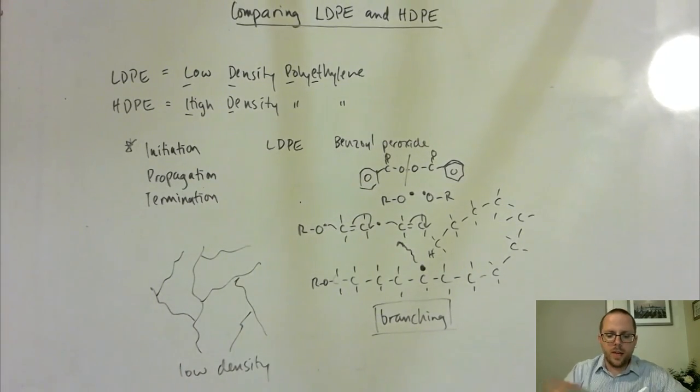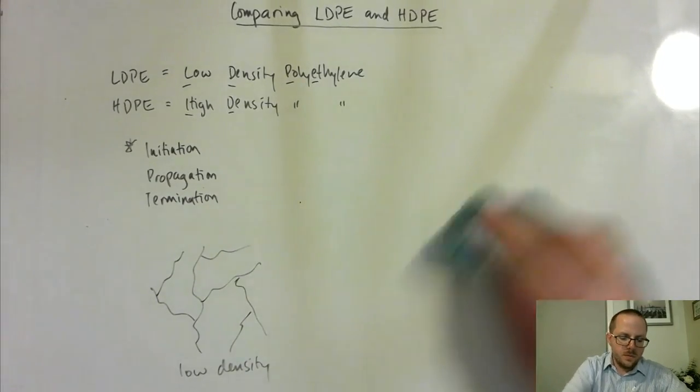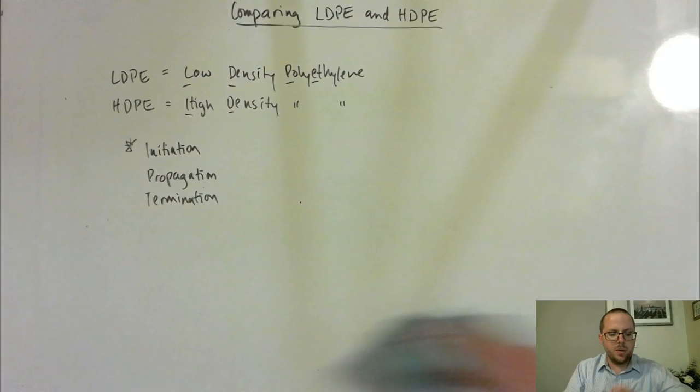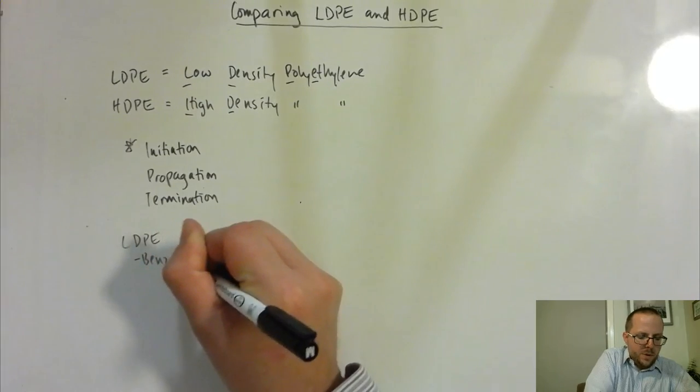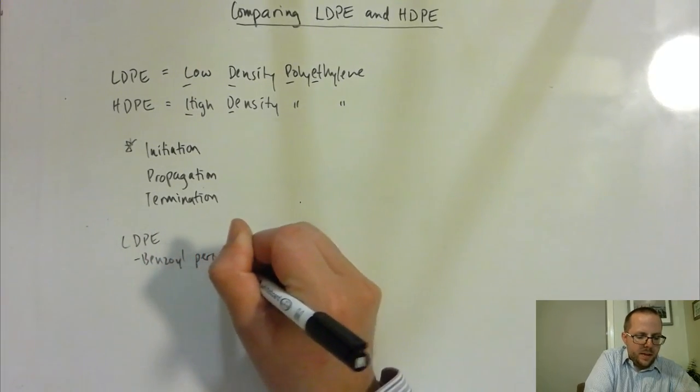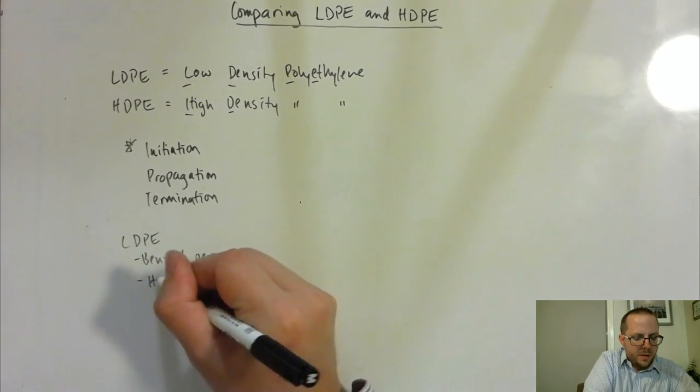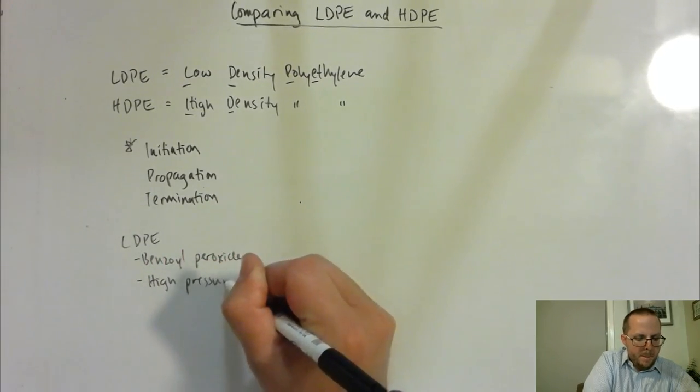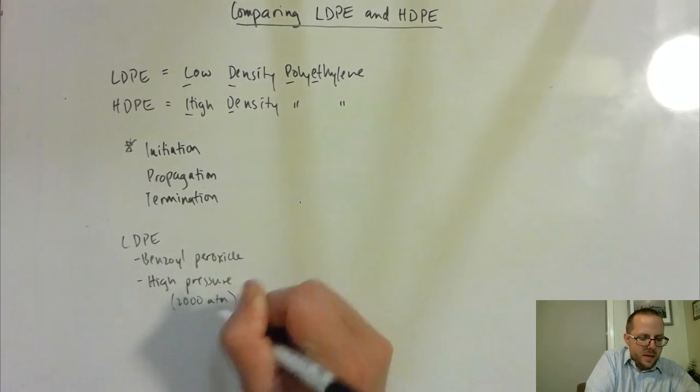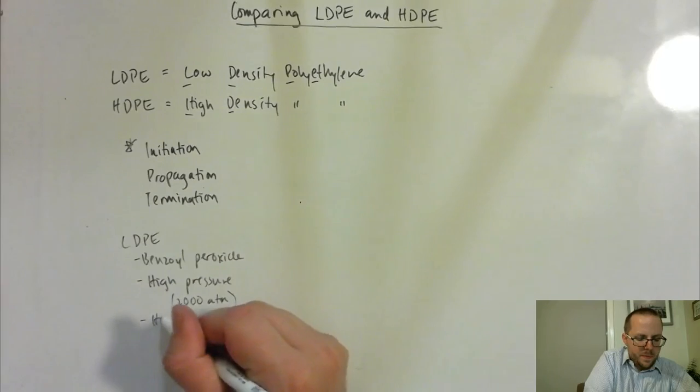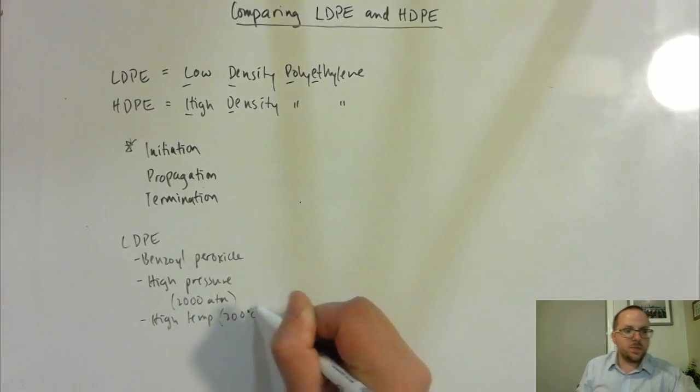But so now let's have a quick look at when we're talking about HDPE. Actually, let's just summarize some of those ideas over here first. So we've got the benzoyl peroxide as our radical to start off our process. And then what we use is we have very high pressures, around about 2,000 times atmospheric pressure and high temperatures, around about 200 Celsius.